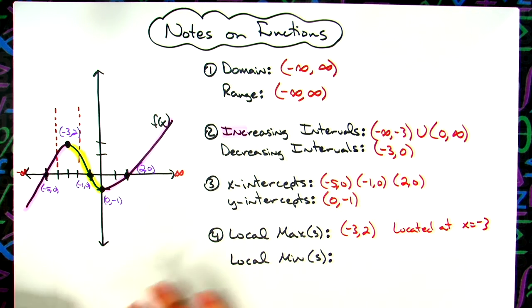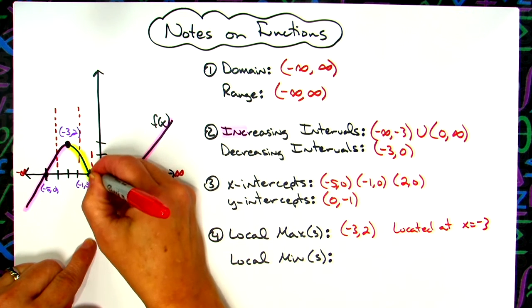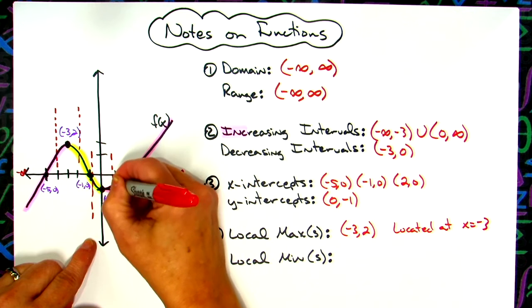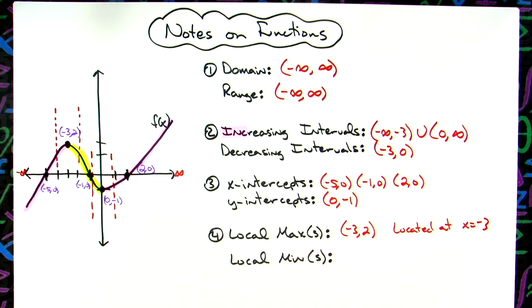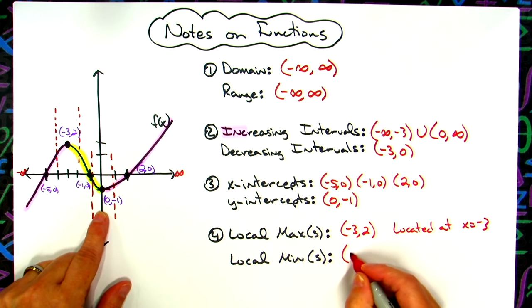Same thing for local minimums. Where are some dips, low points in the graph? Right in here is a low point. And if I just consider the small area right around that, it would be the lowest point in that small section. So a local minimum is going to occur at 0, negative 1.